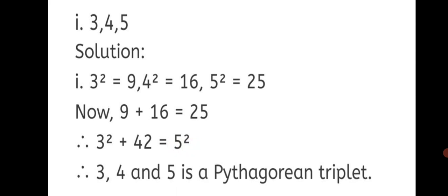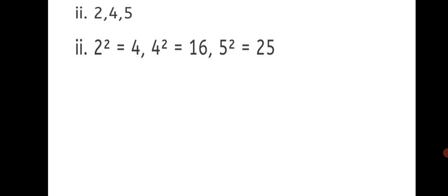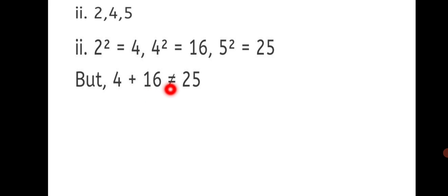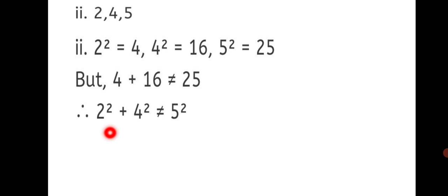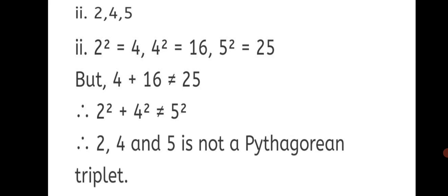Second sub-question: 2, 4, 5. The squares: 2 square is equal to 4, 4 square is equal to 16, and 5 square is equal to 25. Adding the squares of the smaller numbers: 4 plus 16 is not equal to 25. 4 plus 16 gives 20. Therefore, 2 square plus 4 square is not equal to 5 square. Therefore, 2, 4, and 5 is not a Pythagorean triplet.